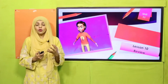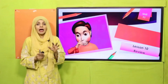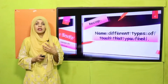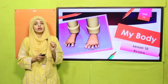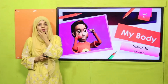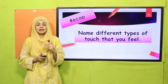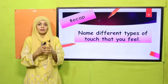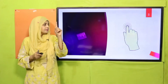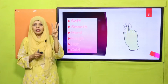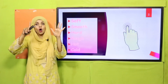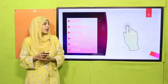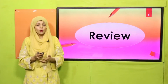My dear students, as you already know, we are on Unit Number 11 and we have finished it — we have done all the reading pages. But today I will give you a complete review of Unit Number 11. We will move forward with the recap of the previous lesson, which was the sense of touch. Quickly tell me: what are the different feelings that you feel when you touch something? It can be soft, smooth, hard, rough, hot, or cold.